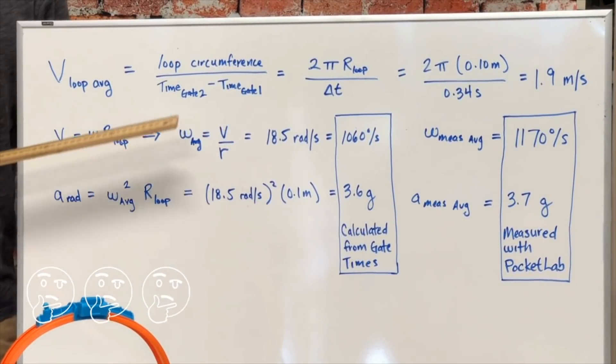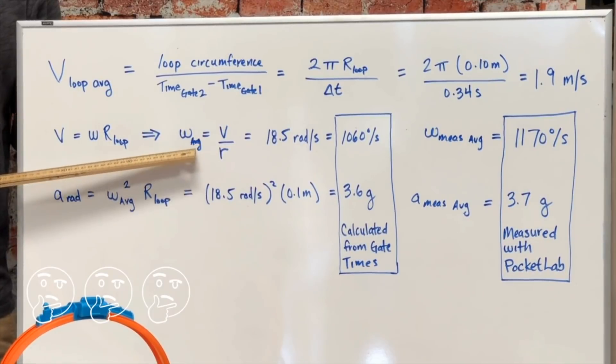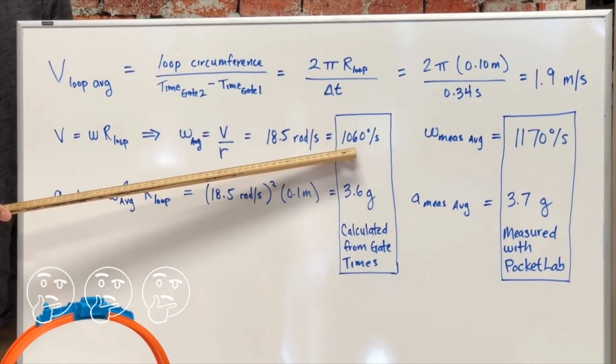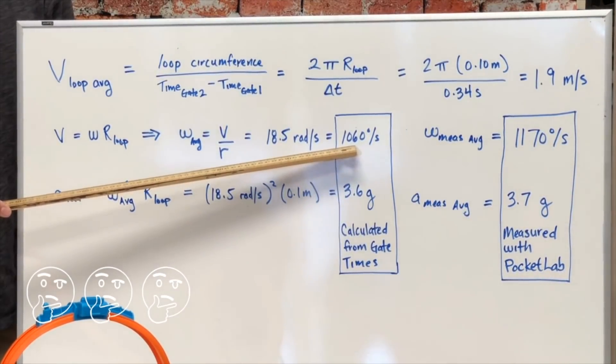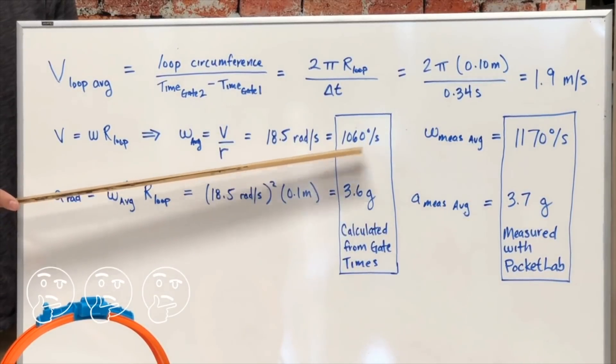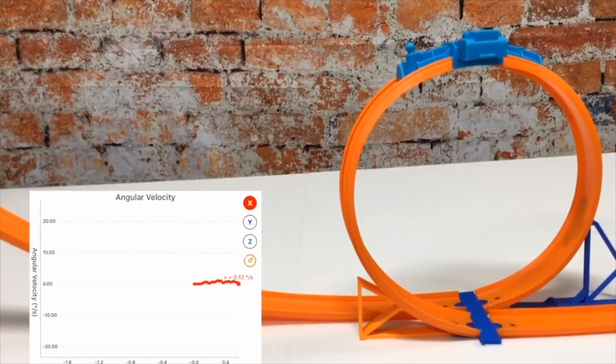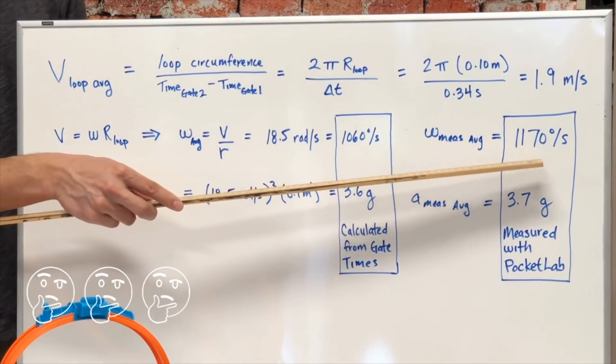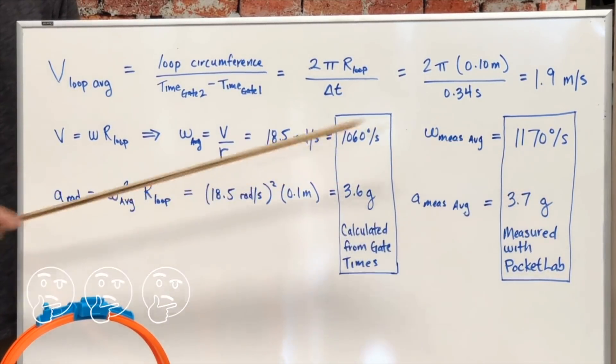Now, using that average velocity, we can also calculate an average angular velocity of 18.5 radians per second or about 1,060 degrees per second. When we compare this to the measurement from our gyroscope, we measured an average angular velocity of 1,170 degrees per second. So, pretty good agreement.